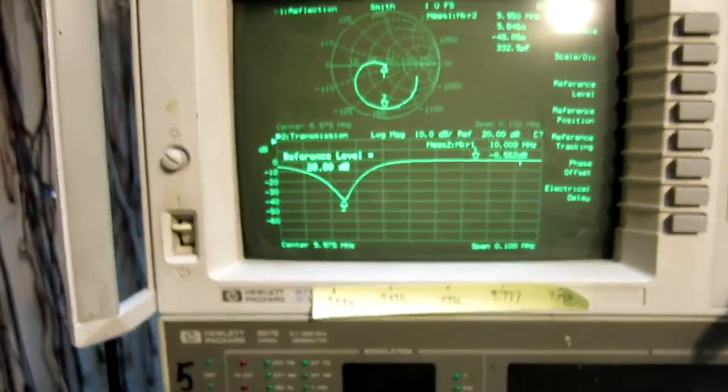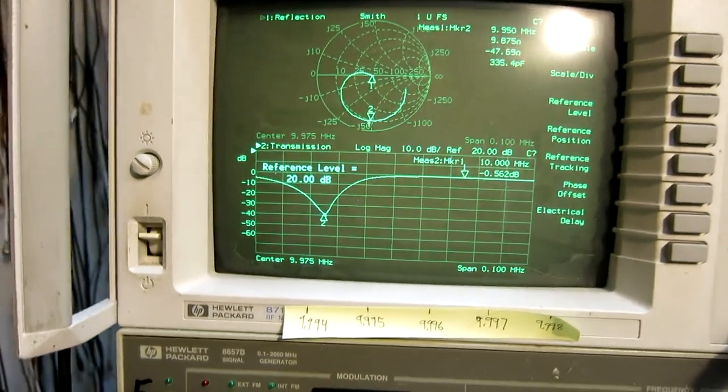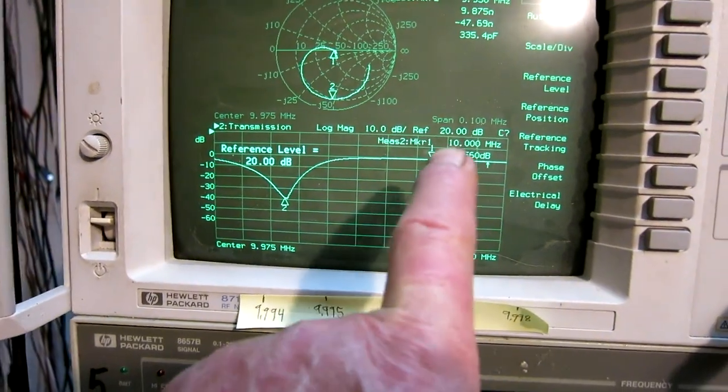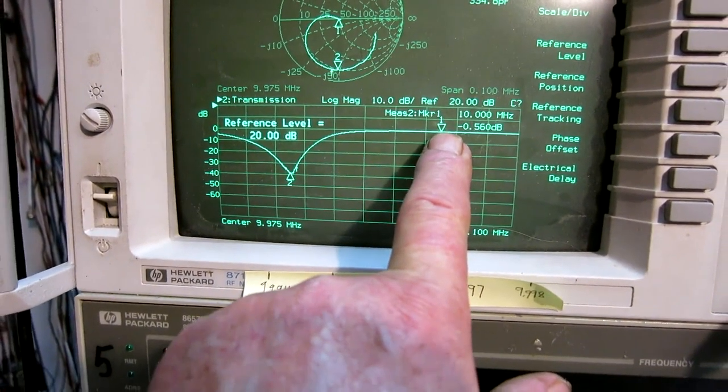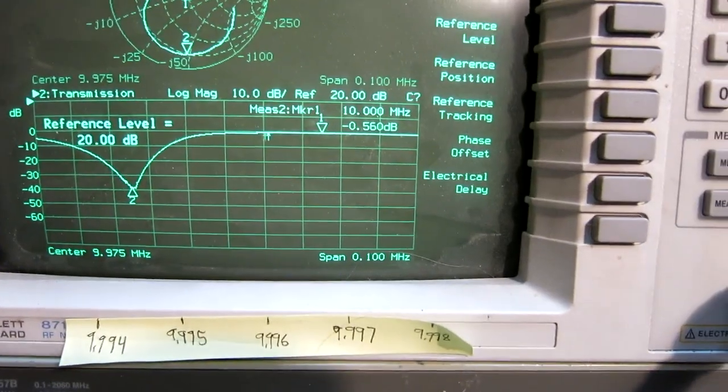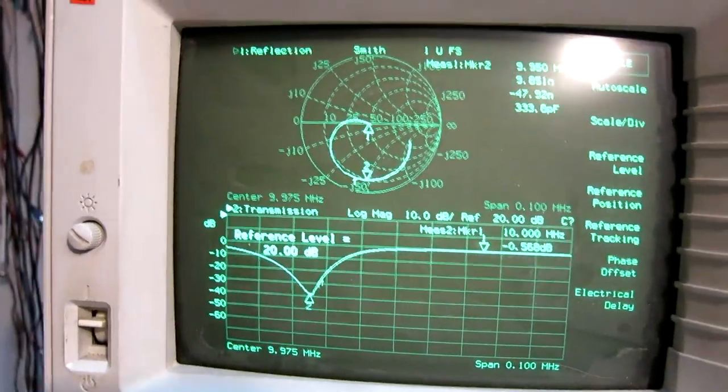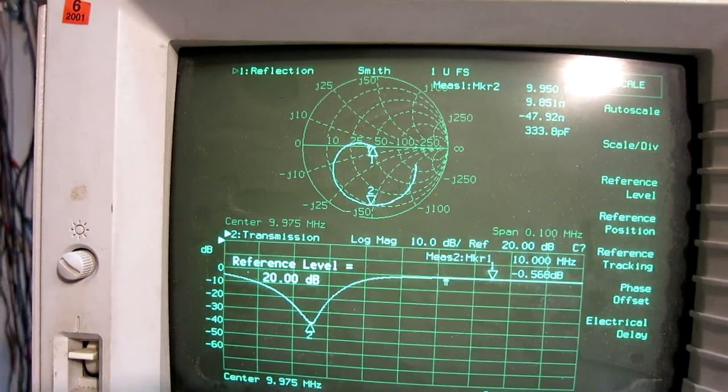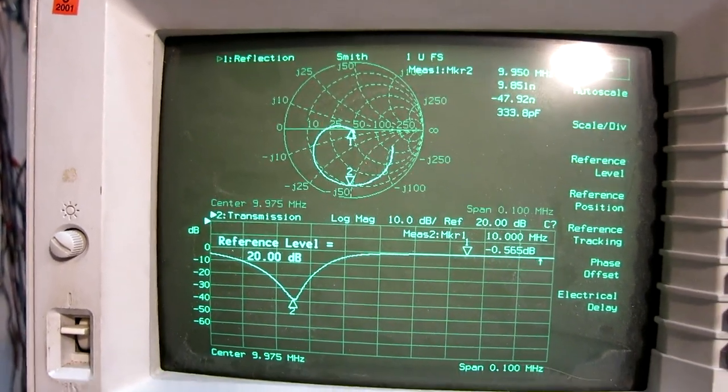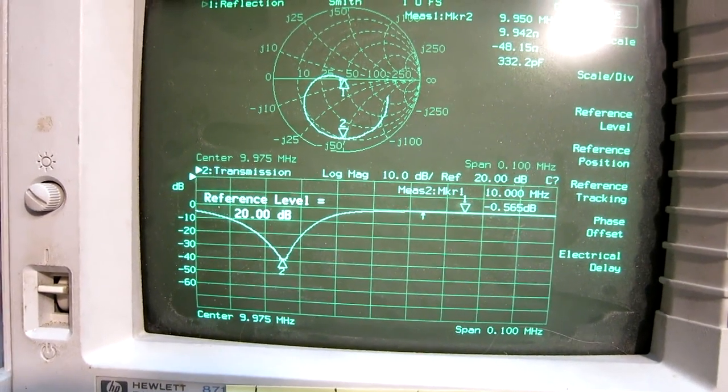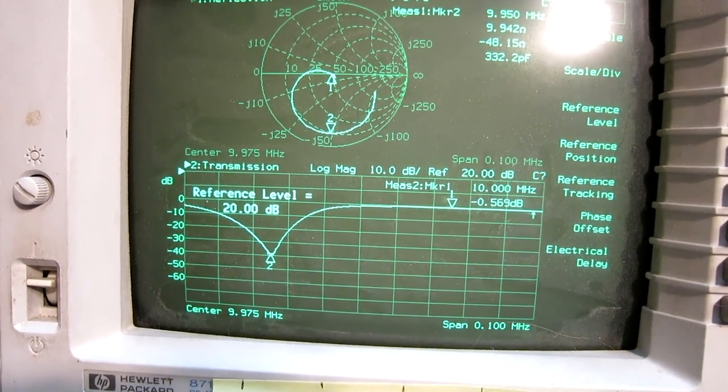The notch is about 40 dB deep and the attenuation at 10 megahertz is about half a dB. The impedance of course is 50 ohms otherwise it couldn't have such a low loss and that is 50 ohms at 10 megahertz.